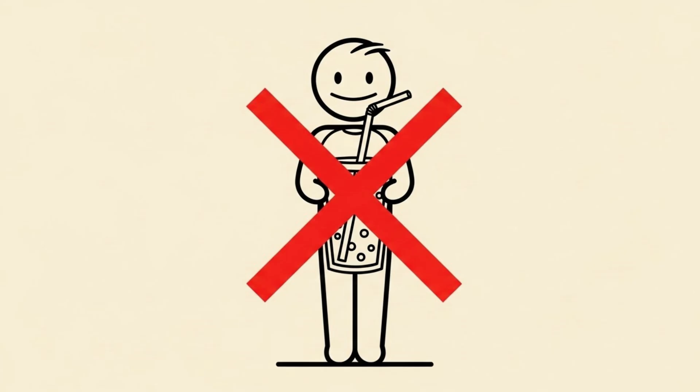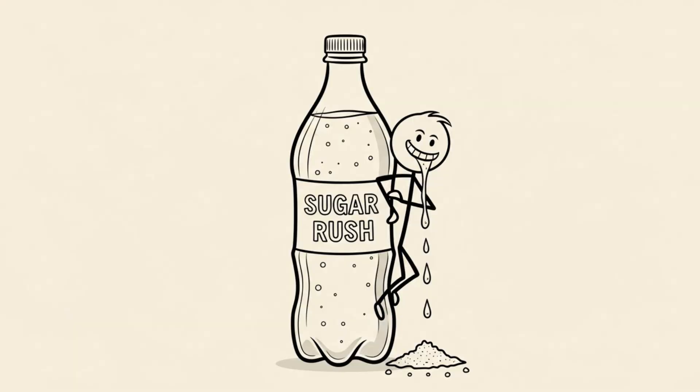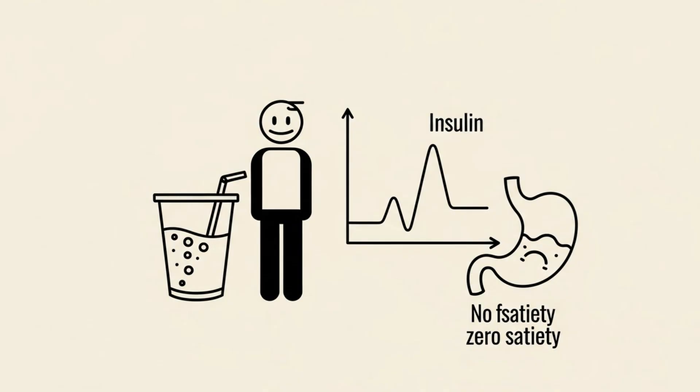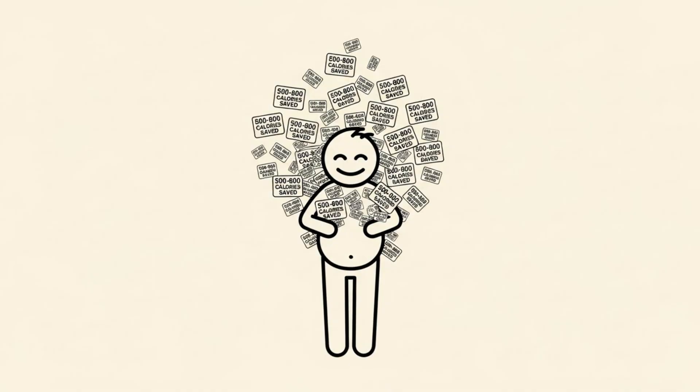And please stop drinking your calories. A frappuccino is not coffee. It is a milkshake. A large soda is basically liquid sugar. These drinks spike your insulin and offer zero satiety. Swap them for zero-sugar versions, black coffee, or sparkling water. If you make these swaps, you can literally save 500 to 800 calories a day without feeling hungry.